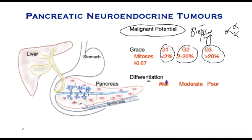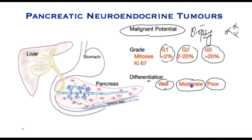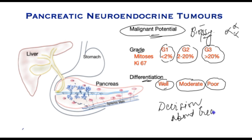When we look at this material we also try to identify whether it is very closely related to the kind of cells it originated from — that is called well-differentiated — or whether it has started to degenerate, which is moderate, or when it has no correlation to the tissue it originated from, that is a poorly differentiated tumour. The grade and the differentiation together give us a good idea about the malignant potential, and this helps in making decisions about treatment options.